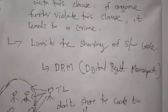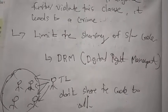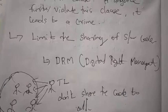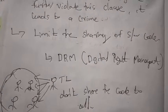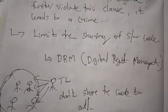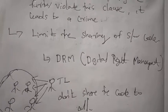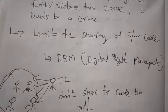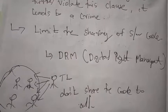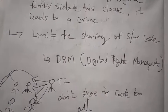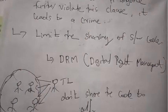The third protection method is to limit the sharing of software code by using DRM — Digital Rights Management. For example, in a company where four or five persons are working together to develop software under a team leader, DRM says do not share the code with everyone. Only share your code with trusted persons. By limiting the sharing of your source code, you can also protect your digital property.